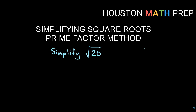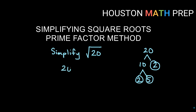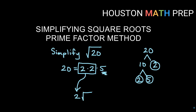Square root of 20 — this one's not too bad. Let's go with 10 times 2. Can't go further with 2. With 10, I can go 2 times 5. So 20 equals 2 times 2 times 5. I have a pair of 2s, so I pull out a single 2. The 5 is not part of a pair, so it goes underneath the root. Our answer is 2 times square root 5.